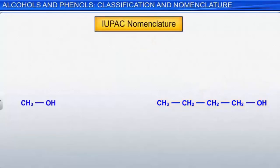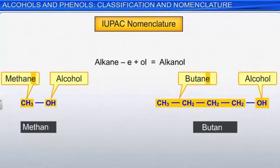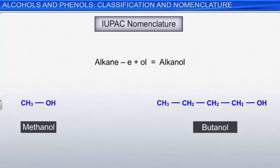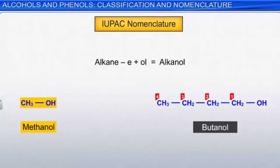In IUPAC nomenclature, the alcohol name is derived from the alkane name of the longest continuous carbon chain. Drop the -e from the alkane name and replace it with the suffix -ol to determine the alcohol name. The location of the hydroxyl group and additional substituents are indicated by using the numbers of the carbon atoms to which these are attached. For example, methyl alcohol (CH3OH) is called methanol, and n-butyl alcohol is called butan-1-ol.